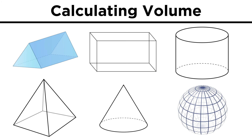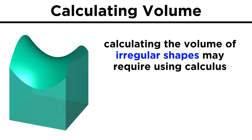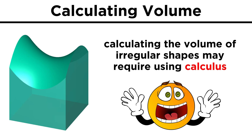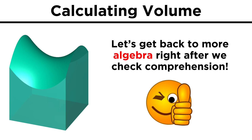These are most of the regular shapes for which we have reliable equations to calculate volume. There are, of course, many irregular shapes that have a more unpredictable curvature, and to calculate the volumes of these, we will need calculus. We aren't there yet — we have lots more algebra to learn first. And since we've wrapped up most of the crucial topics in geometry, we are safe to go back to equations with variables, right after we check comprehension.